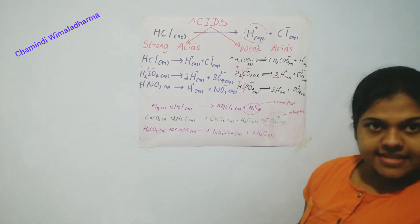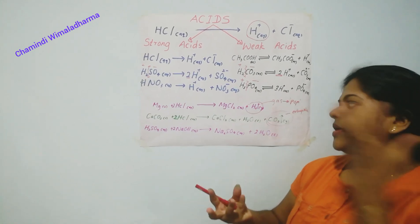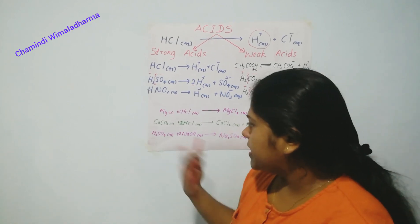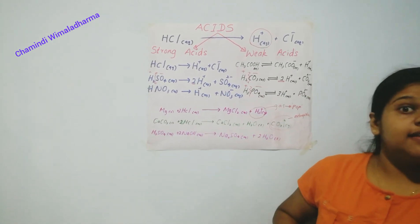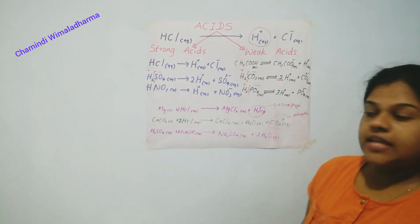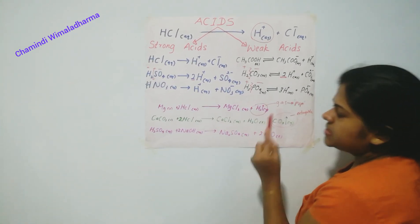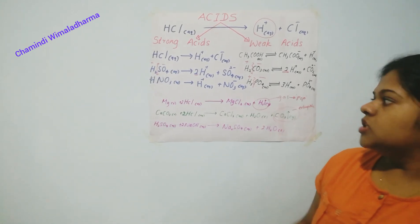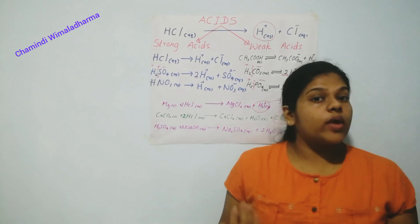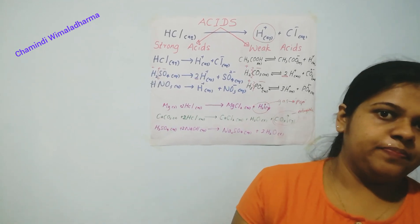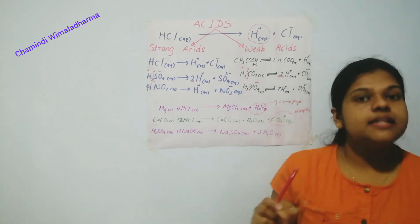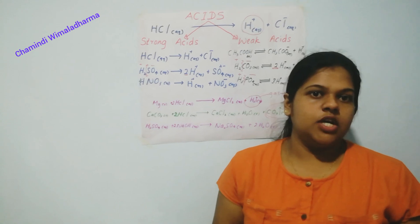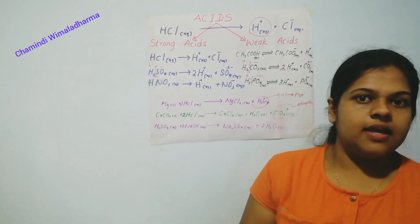We all know when an acid reacts with a base, they will produce salt and water. For example, Sulphuric Acid (strong acid) and Sodium Hydroxide (strong base) produce Sodium Sulphate (salt) and H2O (water). These main reactions you have to remember when talking about the properties of acids. Another special property is that acids can turn blue litmus into red color — that part you also have to remember.